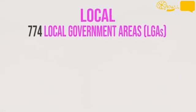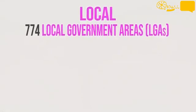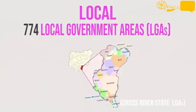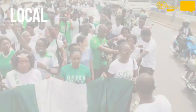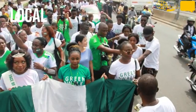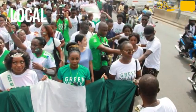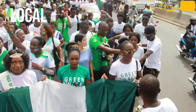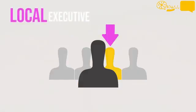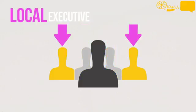Nigeria is divided into 774 local government areas, commonly known as LGAs. These make up the lowest form of government. The purpose of the LGAs is to have an arm of government which is close to the public. The local government council consists of an executive branch, which includes a chairman, vice chairman, secretary, and supervisors.